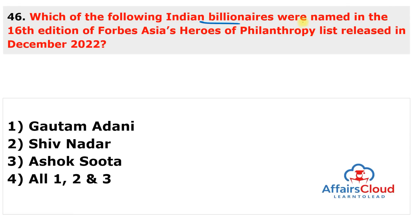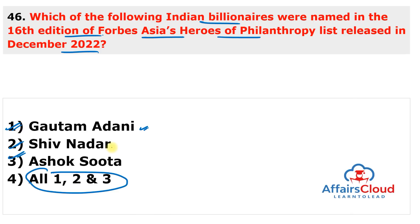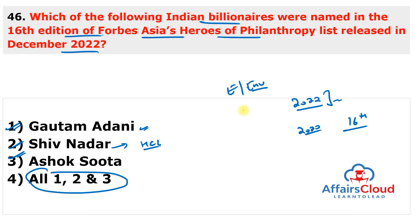Question 46: Which Indian billionaires were named in the 16th edition of the Forbes Asia Heroes of Philanthropy list released in December 2022? All three: Gautam Adani (Chairman, Adani Group), Shiv Nadar (Founder, HCL Technologies), and Ashok Soota (Executive Chairman, Happiest Minds Technology). Malaysian Indian couple Baramal Vasudevan, founder and CEO of Kuala Lumpur-based private equity firm Creator, and his wife Shanti Kandia were also featured. The 2022 list highlights the region's top philanthropists committed to causes like education and the environment.